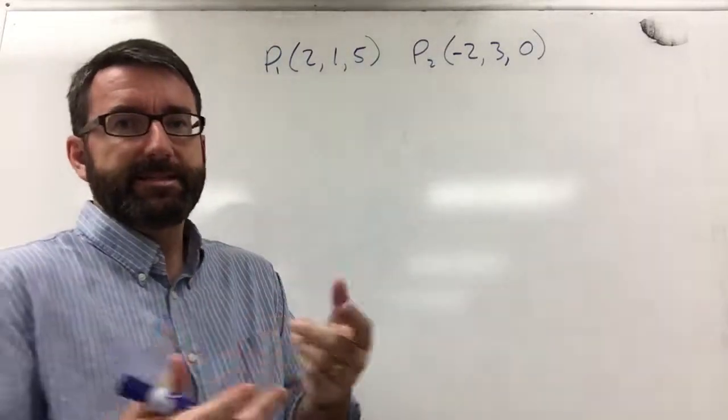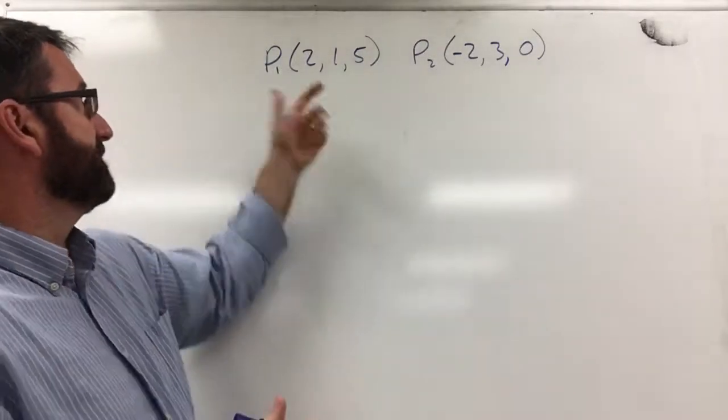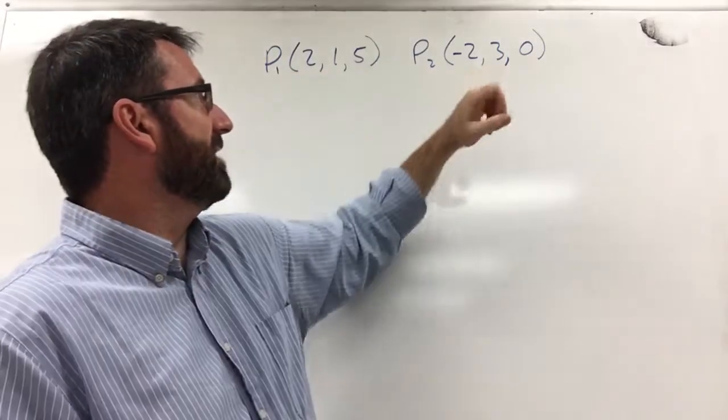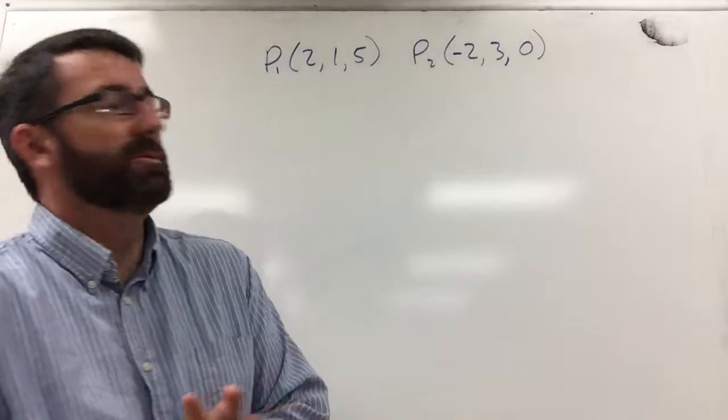Alright, we're asked to find the distance between two points in space. Point 1 is the point (2, 1, 5), and point 2 is the point (-2, 3, 0).